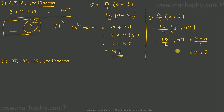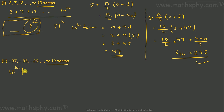That gives 10 over 2 into 49, which is 490 over 2, so the sum is 245. This means the sum up to 10 terms is 245. Now for the next progression, we need the sum up to 12 terms, so first let's find the 12th term.